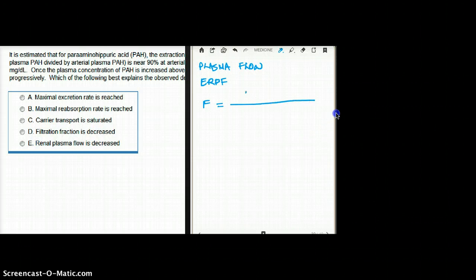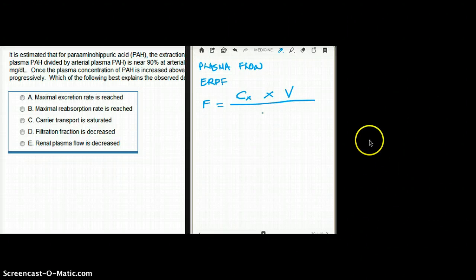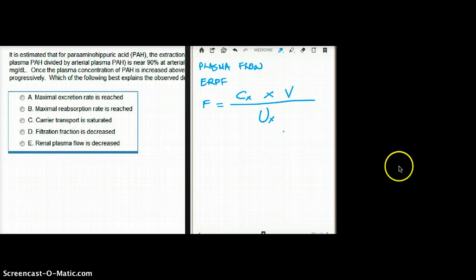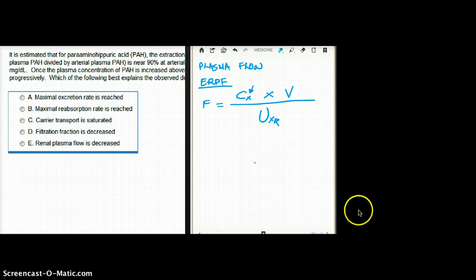Flow is equal to concentration of X times urine flow divided by urine concentration of X. So when we're measuring effective renal plasma flow, we're just going to replace this X with PAH. If we're going to measure glomerular filtration rate, we're going to replace that X with creatinine. You get the idea.